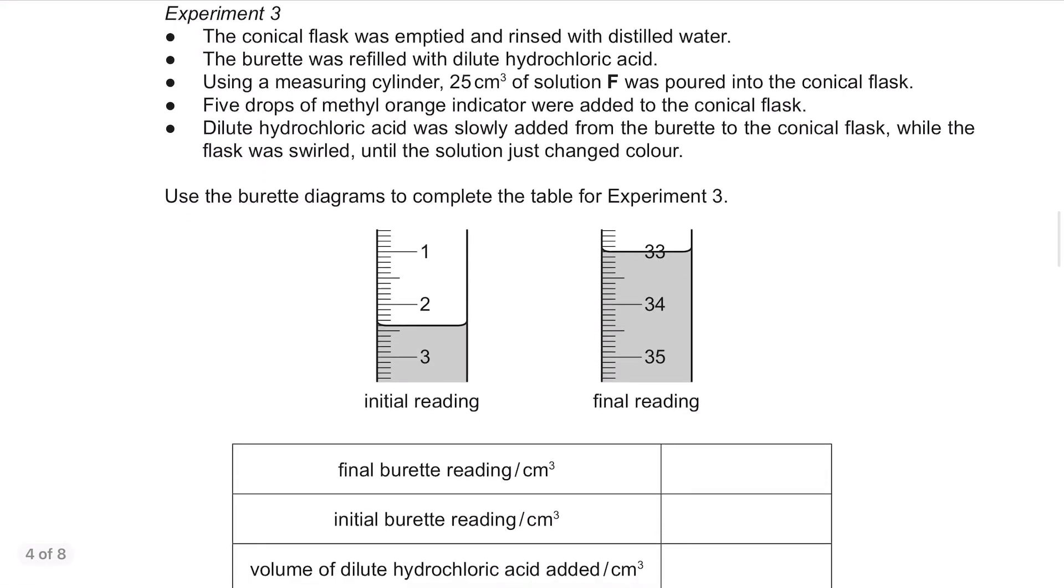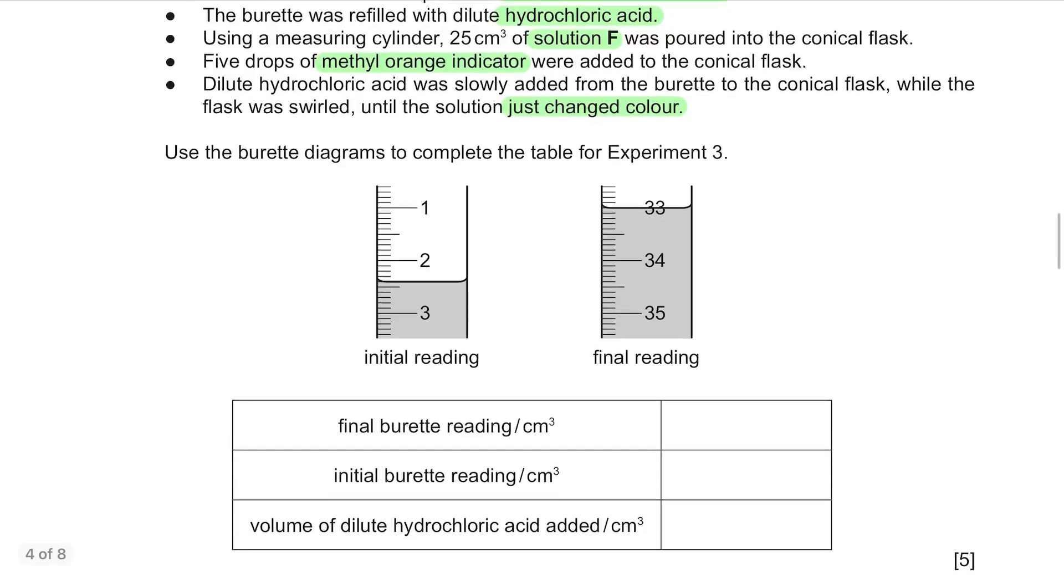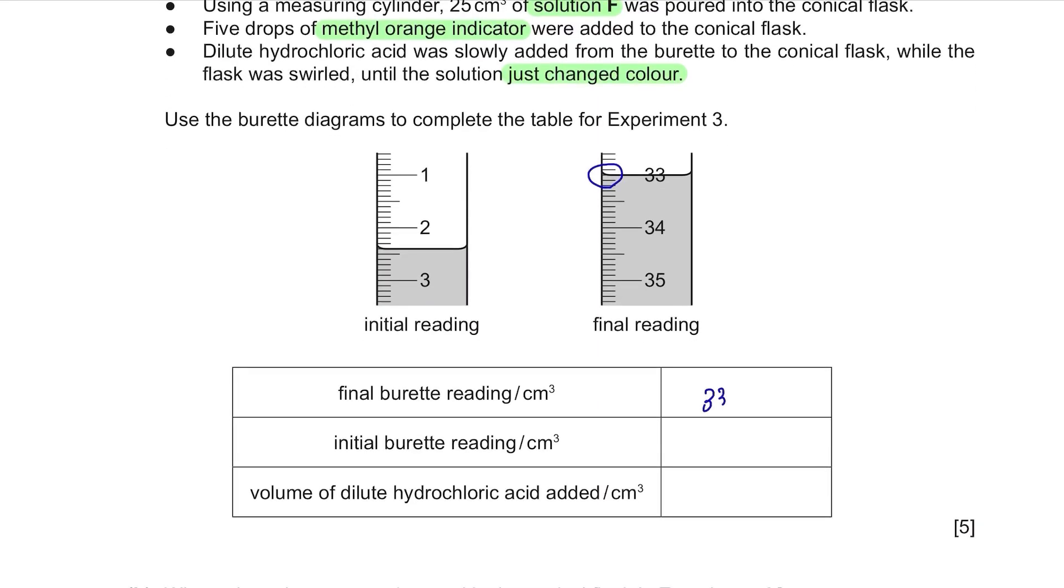Experiment 3. The conical flask was emptied and rinsed with distilled water. The burette was refilled with dilute hydrochloric acid. Using a measuring cylinder, 25 cm³ of solution F was poured into the conical flask. Five drops of methyl orange indicator were added to the conical flask. Dilute hydrochloric acid was slowly added from the burette to the conical flask while the flask was swirled until the solution just changed colour. Use the burette diagrams to complete the table for experiment 3. Final reading is 33.0 and the initial reading is 2.4. The volume of dilute hydrochloric acid added is 33.0 minus 2.4 so it's 30.6.